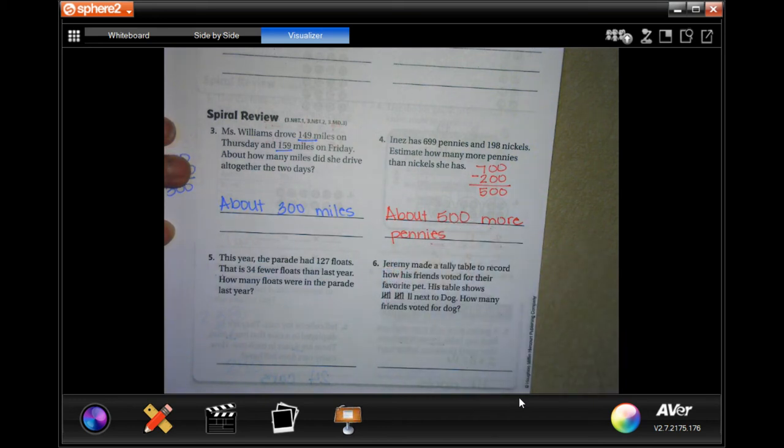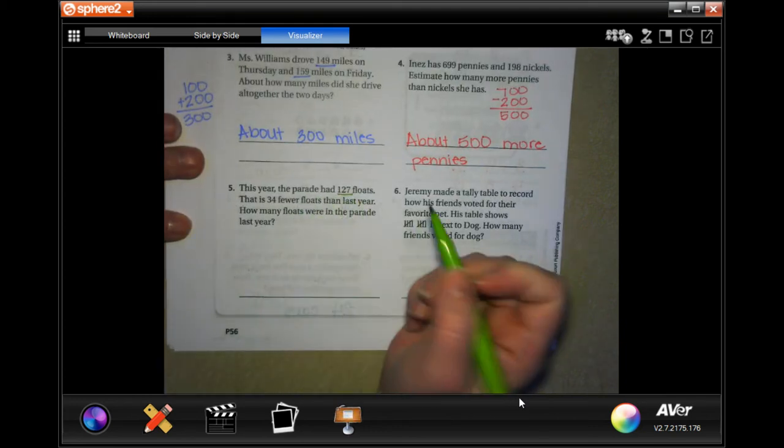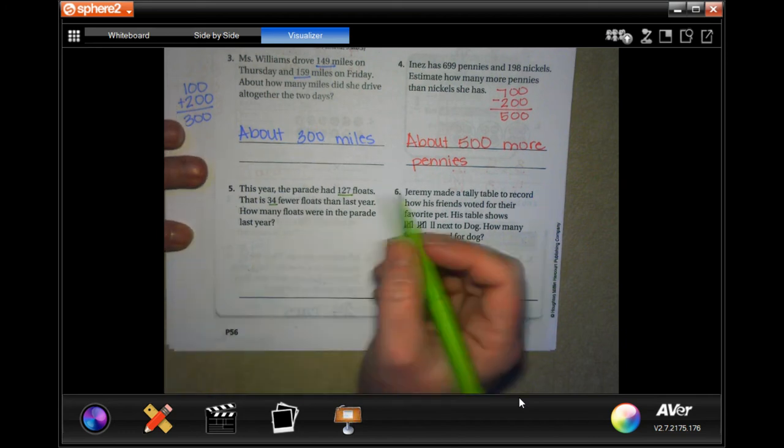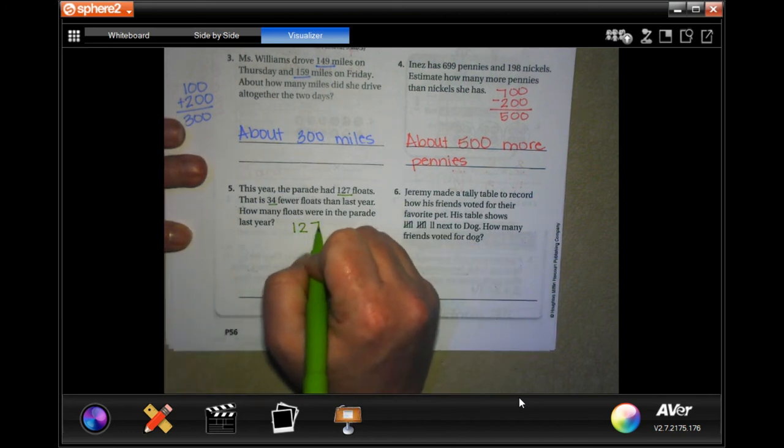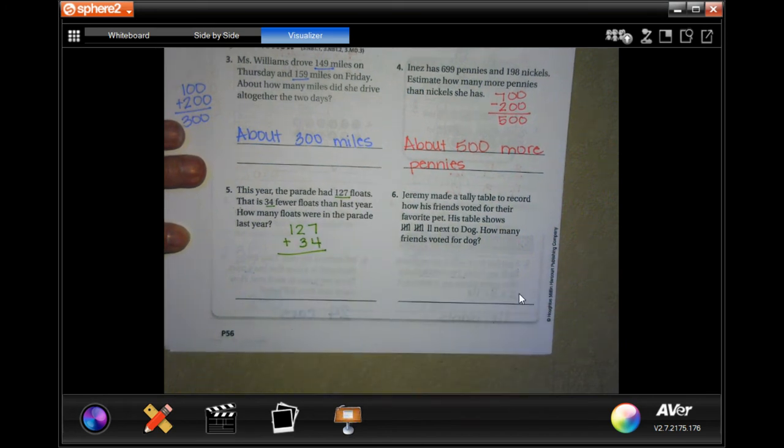So, this year, the parade has 127 floats. That's 34 fewer floats than last year. How many floats were in the parade last year? So, I'm going to take that 127 and I'm going to add 34 and see how many that gets me.